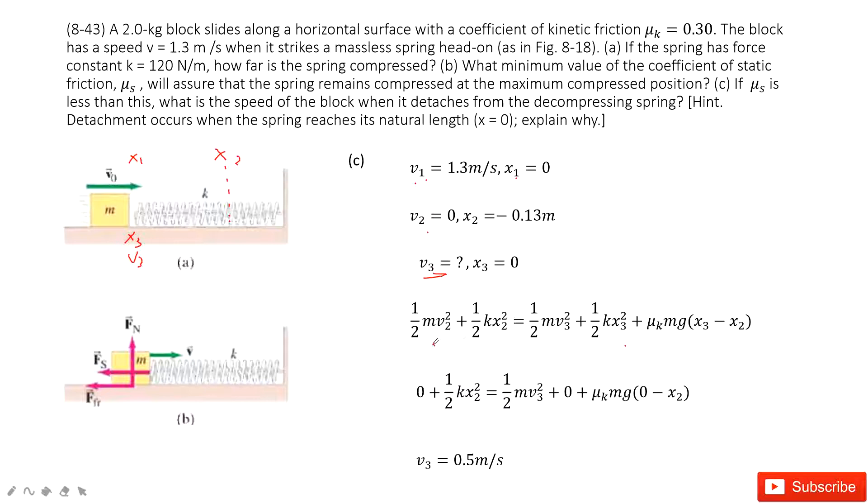So this one, the kinetic energy at position 2 plus the elastic energy at position 2 equals the kinetic energy at position 3 plus the elastic energy at position 3 and also this one, thermal energy. From x2 to x3, it moves this way. The friction is this way. So the friction also does work. We have μk mg(x3 - x2). This one is the distance it covered.